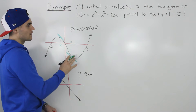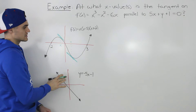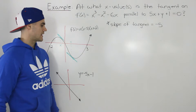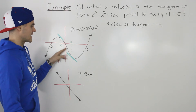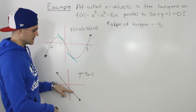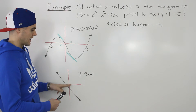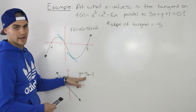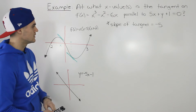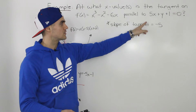You don't always have to draw the functions when given a question, but I drew it here to give a visual of what we're doing — we're solving for these x values. Because these tangents are parallel to this line, we know their slopes are the same. This line has a slope of negative five, since in y = mx + b form the m value is negative five.